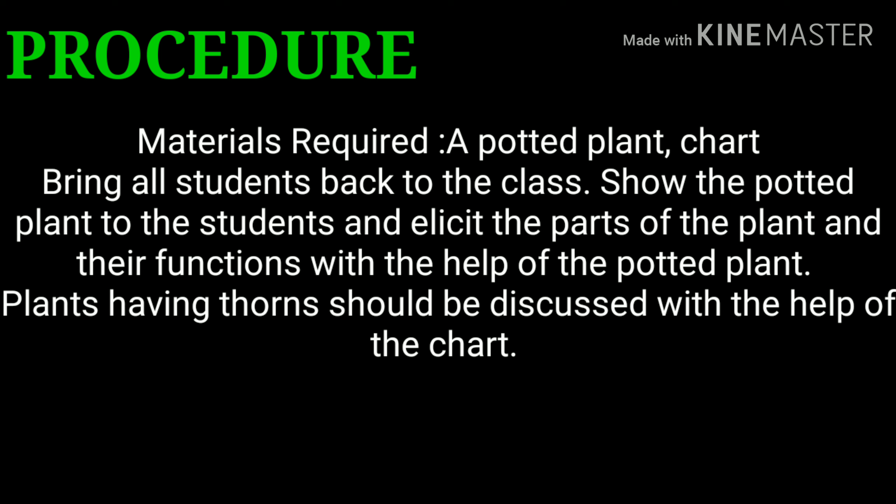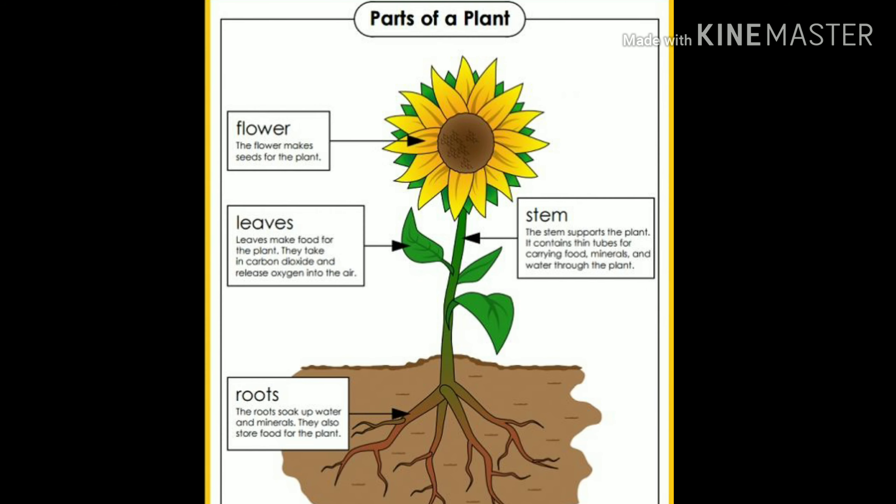The teacher should bring all the students back to the class, show the potted plant to the students, and elicit the parts of the plant and their functions with the help of the potted plant. Then with the help of the chart, the teacher should explain the parts of the plant in detail.